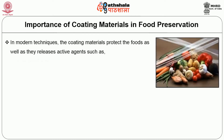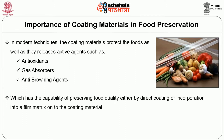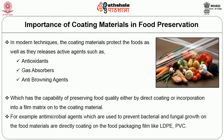In modern techniques, coating materials protect foods as well as release active agents such as antioxidants, gas absorbers, and anti-browning agents, which preserve food quality either by direct coating or incorporation into a film matrix onto the coating material. For example, antimicrobial agents used to prevent bacterial and fungal growth on food materials are directly coated on food packaging films like low-density polyethylene and PVC.